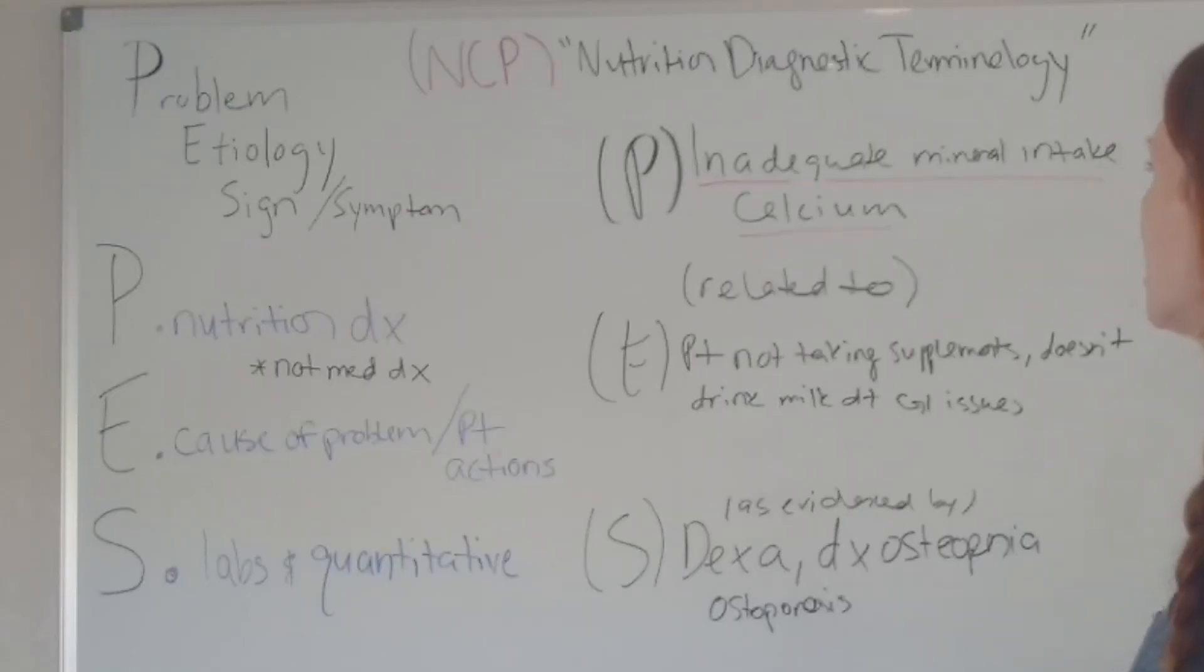Here's another example. The problem for this patient is inadequate mineral intake of calcium related to patient not taking supplements and doesn't drink milk due to GI issues. There's definitely a lot more wording here compared to the other example, and that's okay. You just base this information on what the patient is doing. The patient is not taking supplements and doesn't drink milk due to GI issues. This is what the patient is telling you, or the cause of the problem, as evidenced by quantitative values. The quantitative values that were assessed were the DEXA, which is a bone mineral scan, and she was diagnosed with osteopenia in her spine and osteoporosis in her hip.